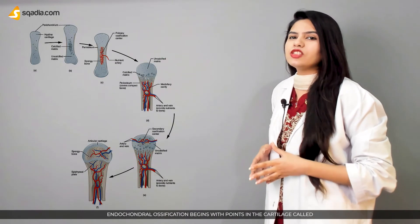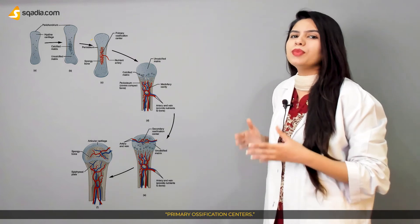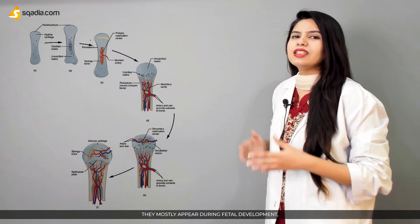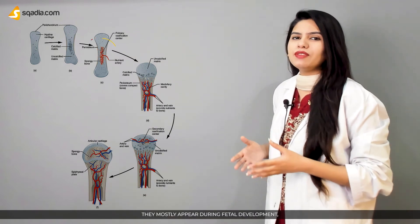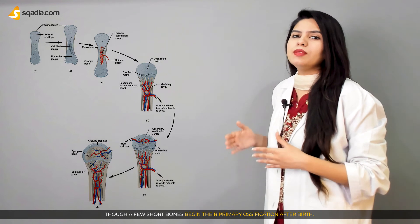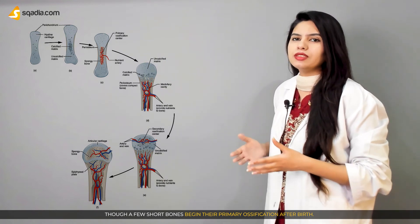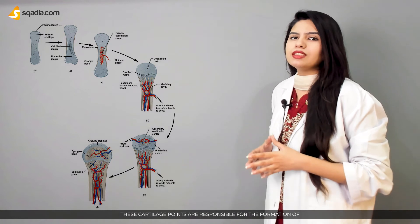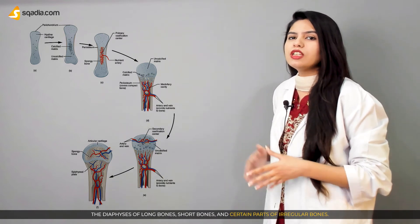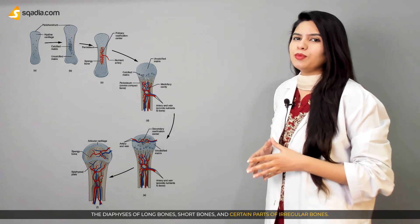Endochondral ossification begins with points in the cartilage called primary ossification centers. They mostly appear during fetal development, though a few short bones begin their primary ossification after birth. These cartilage points are responsible for the formation of the diaphysis of long bones, short bones, and certain parts of irregular bones.